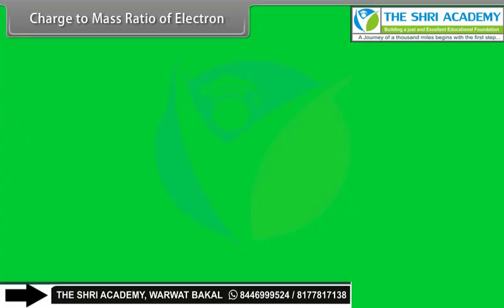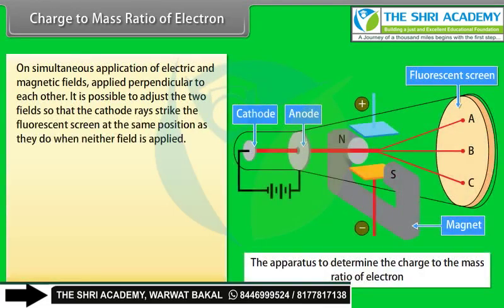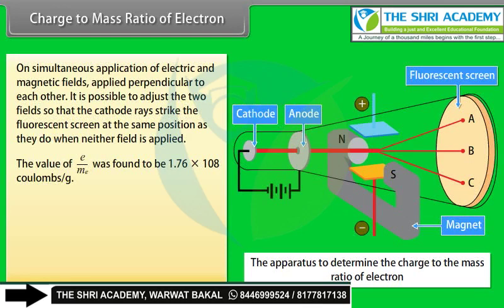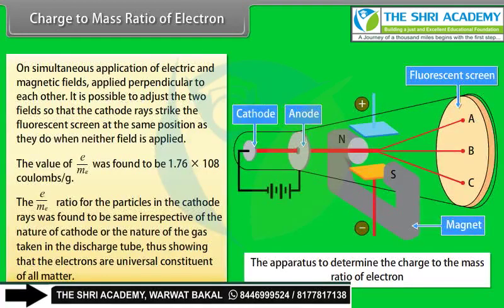Charge-to-mass ratio of the electron: On simultaneous application of electric and magnetic fields perpendicular to each other, the fields can be adjusted so cathode rays strike the screen at the same position as with no fields applied. The charge-to-mass ratio of electrons was found to be 1.76 × 10⁸ coulombs per gram. This e/m ratio was the same regardless of the cathode material or gas, showing electrons are a universal constituent of all matter.